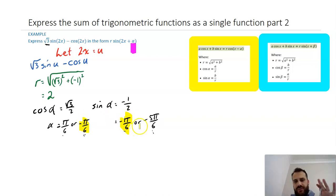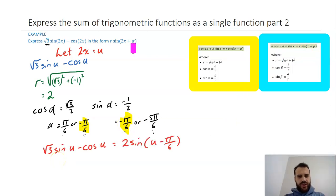Now that I have that information, I can just sub it into my equation as r sine u plus alpha. So, that just means that root 3 sine u minus cos u, which is what we started with, is equal to 2 sine u minus pi on 6.